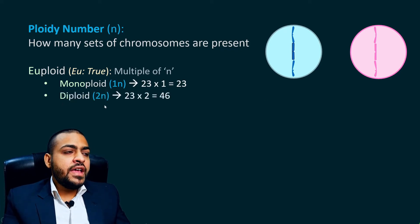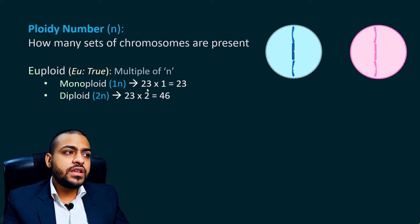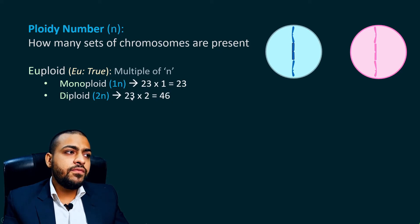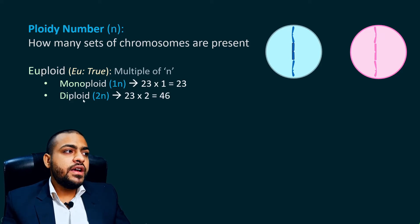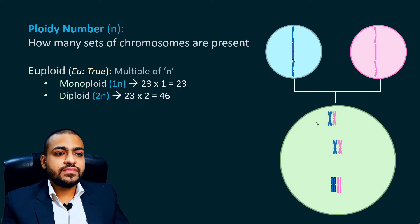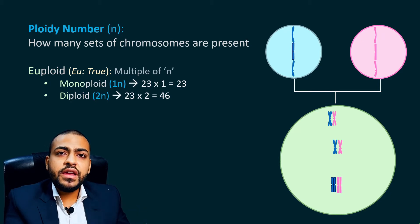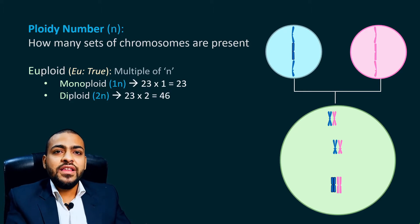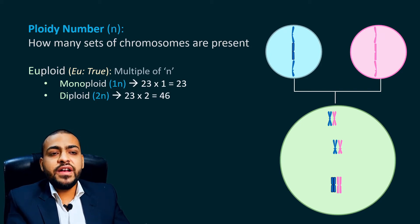Similarly, there is a term called diploid. Diploid means we are having two sets of 23 chromosomes — 23 multiplied by 2 equals 46. This chromosome number 46 is a multiple of n (n is 23), so 23 × 2 = 46. Diploid is a type of euploid and the ploidy number is 2n. An example is the somatic cell. From the zygote onwards, the complete human organism — all of those cells will be diploid cells with ploidy number 2n.